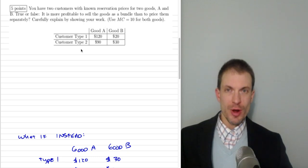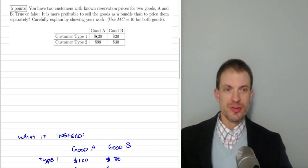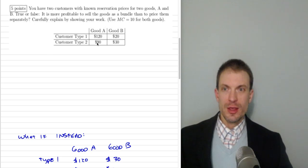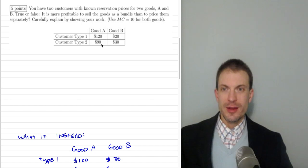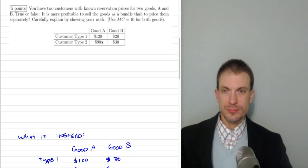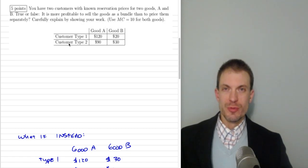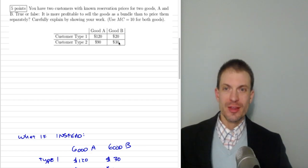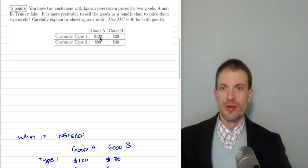Here are our consumers: consumer of type 1 and consumer of type 2. We have good A and good B. Consumer of type 1 would pay $120 for good A and $20 for good B. Consumer of type 2 would pay $90 for good A and $30 for good B. Consumer of type 1 has the high willingness to pay for good A, and consumer of type 2 has the high willingness to pay for good B. These preferences are negatively correlated, which makes this a good candidate for bundling being helpful.